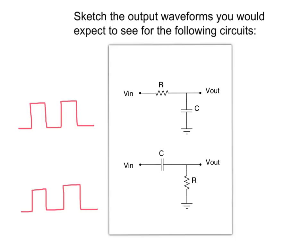Let's sketch the output waveform of the first circuit. Viewers will recognize this as a simple RC low-pass filter. It will smooth out the edges of the square wave. The output of the circuit will look like this.